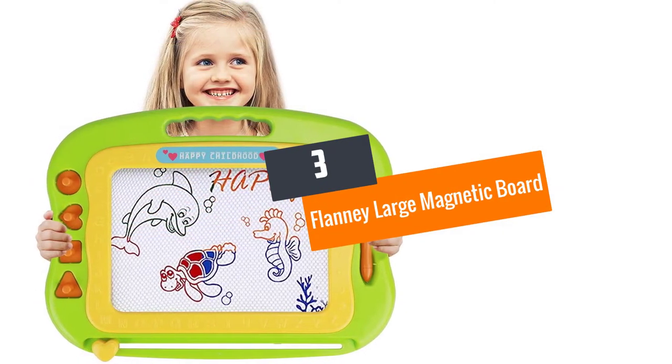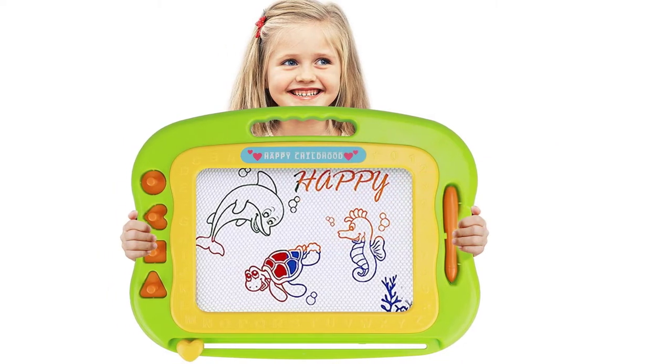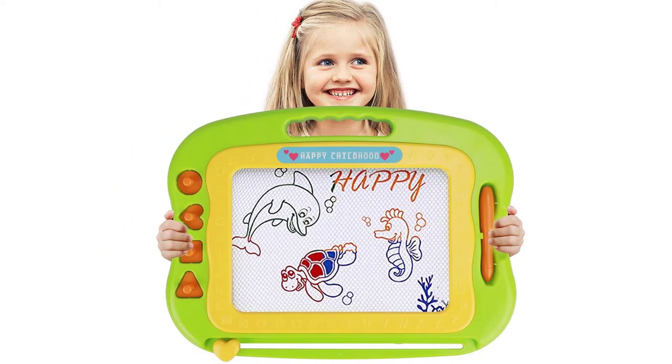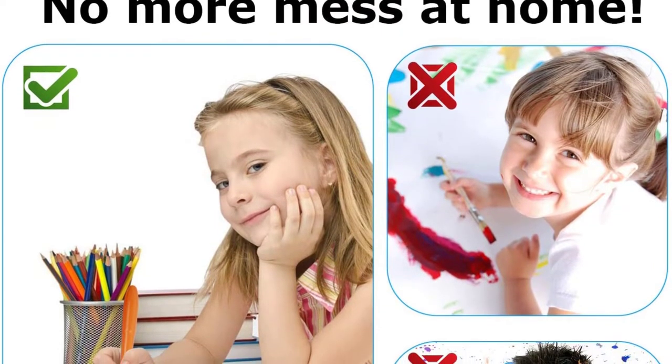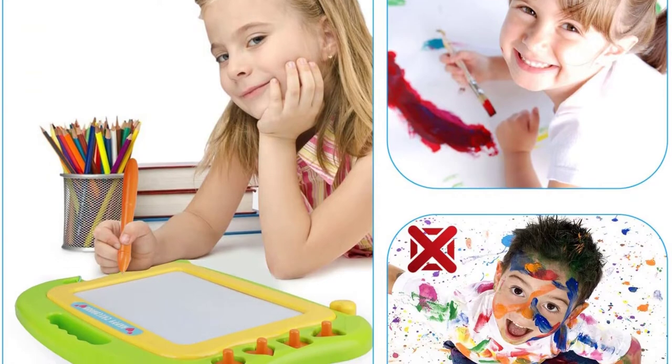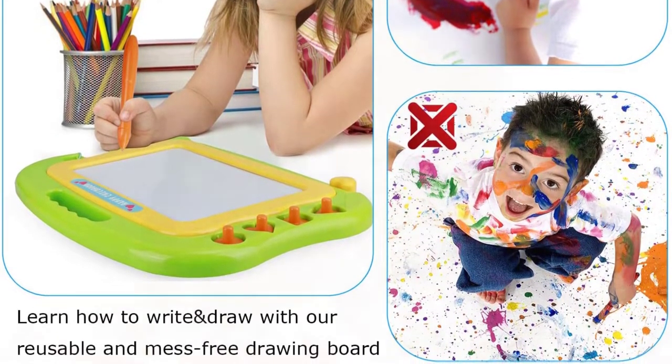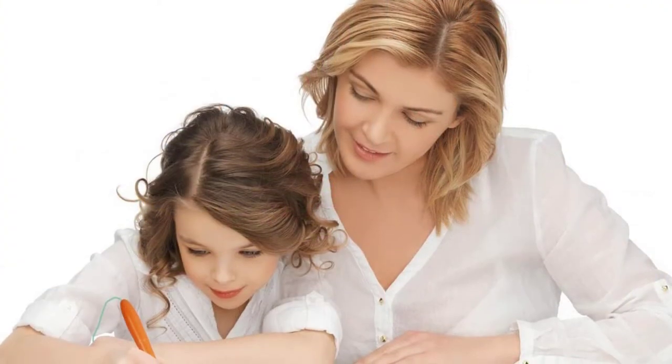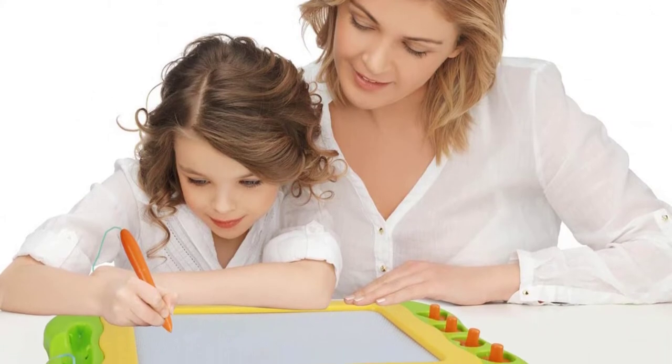Number three: Flanny large magnetic board for kids toddlers. This product is an interesting drawing board as it seems one small board is incorporated on a big board. Evidently, it gives your child even more space to give color to their imagination. Keeping practical necessities in mind, the product has added the small but much needed feature of knobs to all the stamps that come with the boards. This makes holding and picking the stamps up much more convenient while drawing.